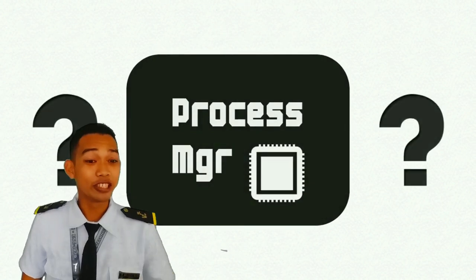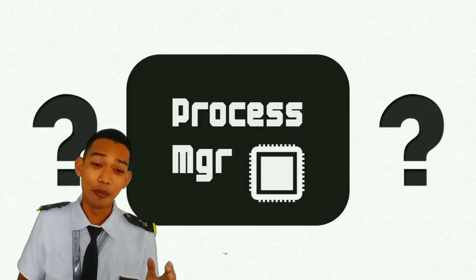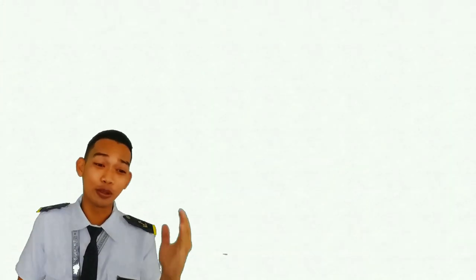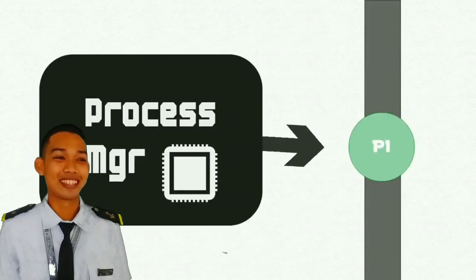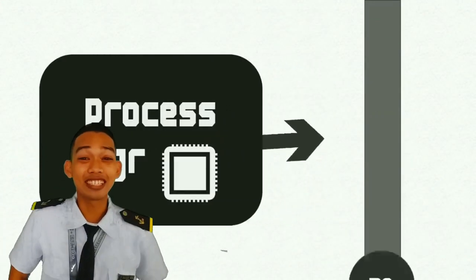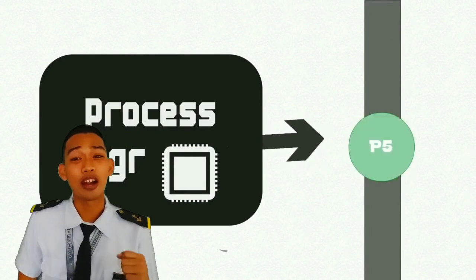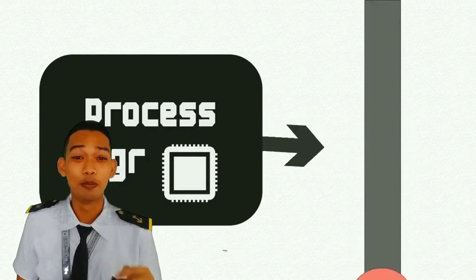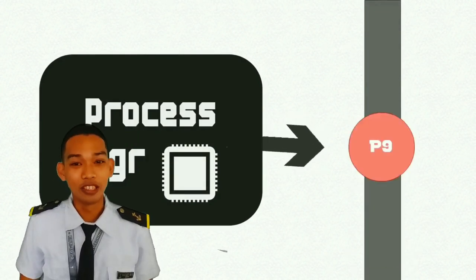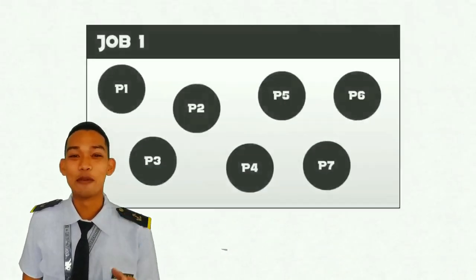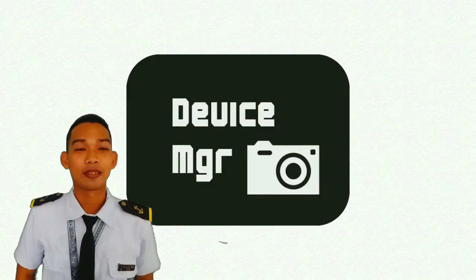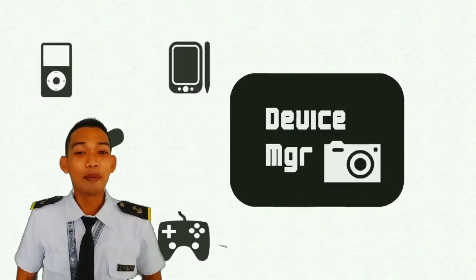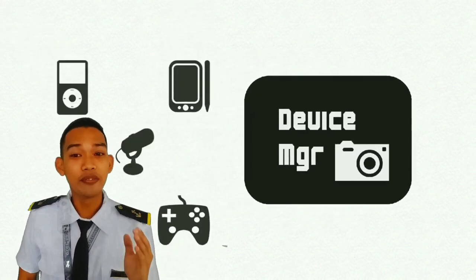The process manager decides how to allocate the brain of the computer, known as the Central Processing Unit. It is necessary that the process manager keeps track of the status of each process, handling jobs as they enter the system and managing each process associated with those jobs.